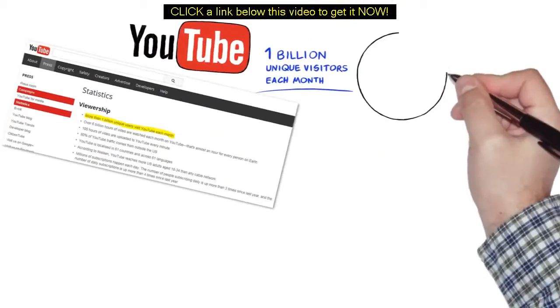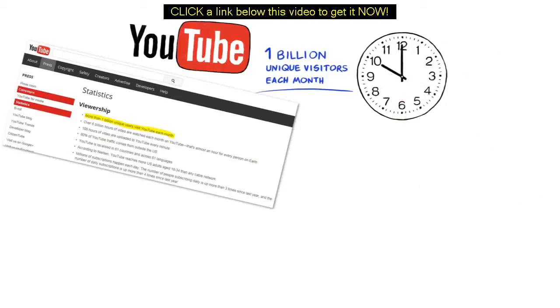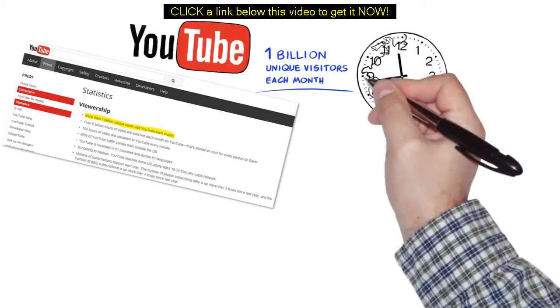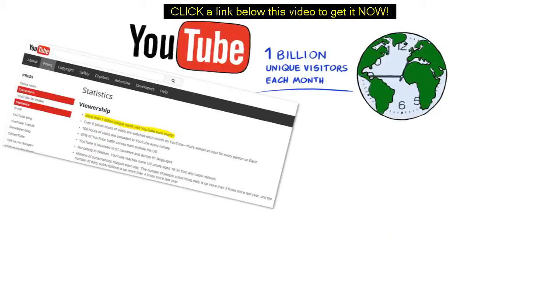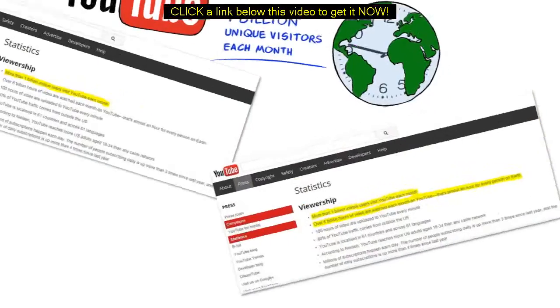And did you know that over 6 billion hours of videos are being watched each month on YouTube? I mean, that's almost one hour for every person on Earth. Well, now you do.